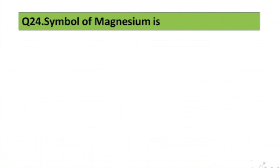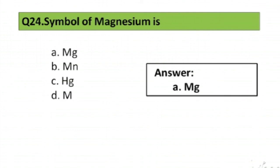Question number 24. Symbol of Magnesium is: A. MG, B. MN, C. HG, D. M. The right answer is option A, MG.